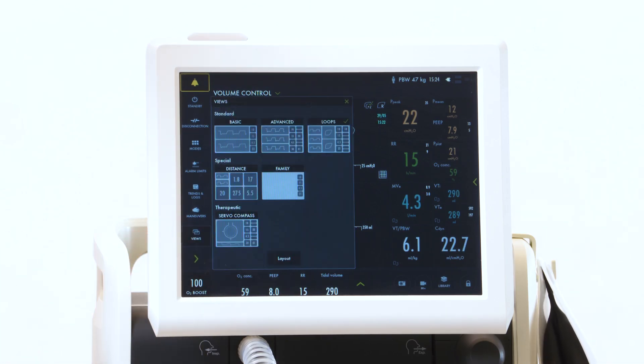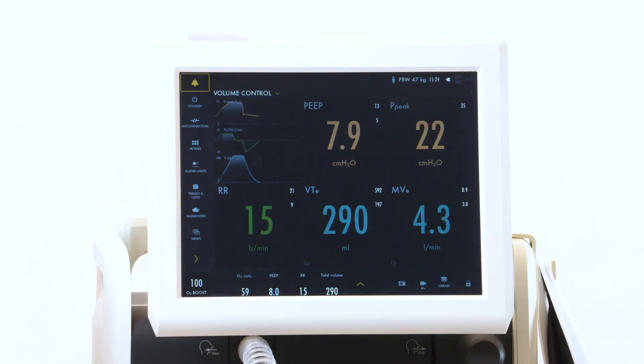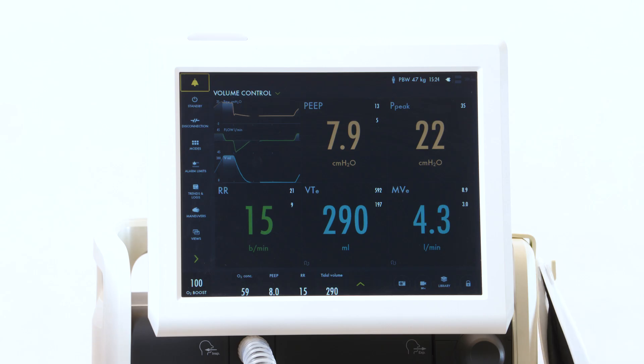When you look at your views again, there's a distance view. It will show you five basic measured values, as well as your pressure and flow waveforms.